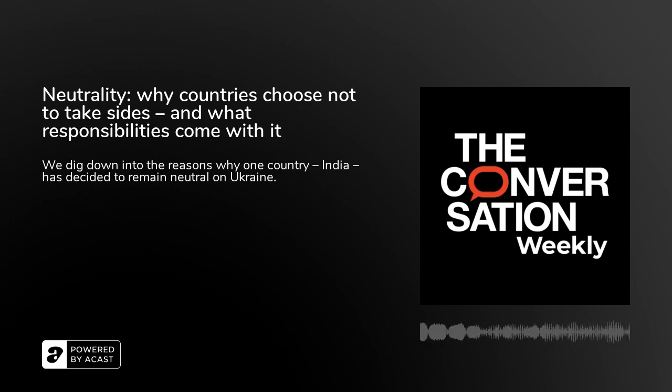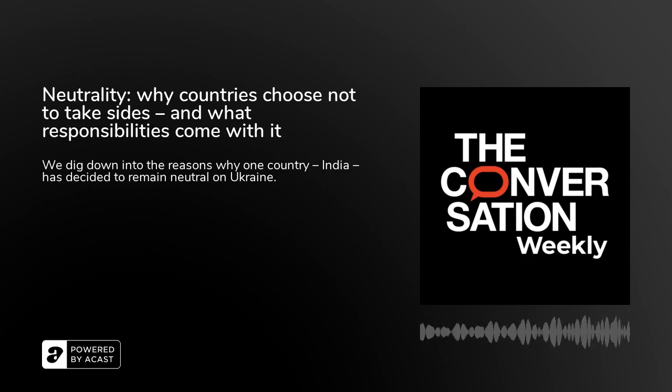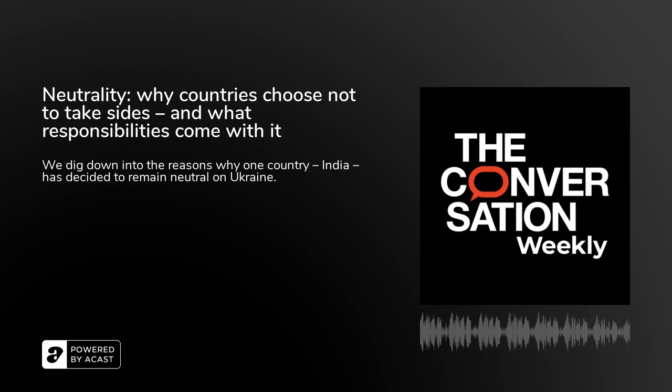We spoke with an historian about how an age of neutrality emerged in the 19th century and the lessons it has for the war in Ukraine. And we ask a foreign policy expert about why one country in particular, India, is staying neutral over Ukraine. I'm Dan Marino in San Francisco, and I'm Gemma Ware in London. You're listening to The Conversation Weekly, the world explained by experts.